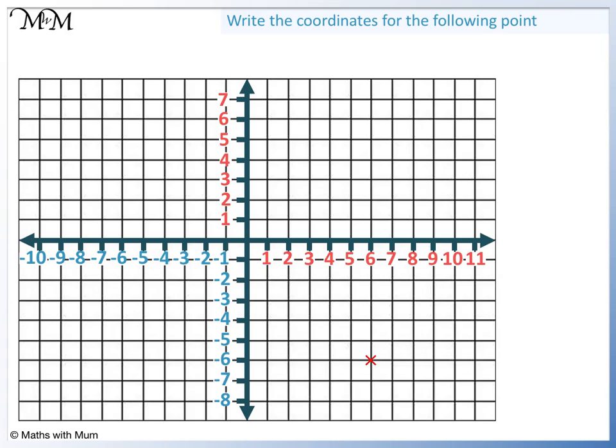First the horizontal direction. We read across and we get to 6. Next the vertical direction. We read down and we get -6. The coordinates are (6, -6).